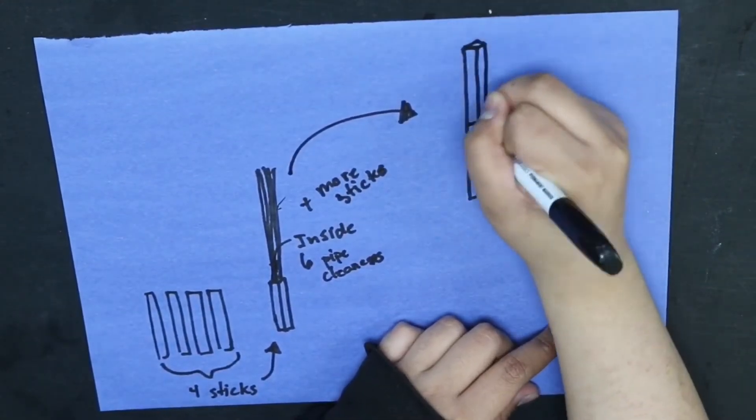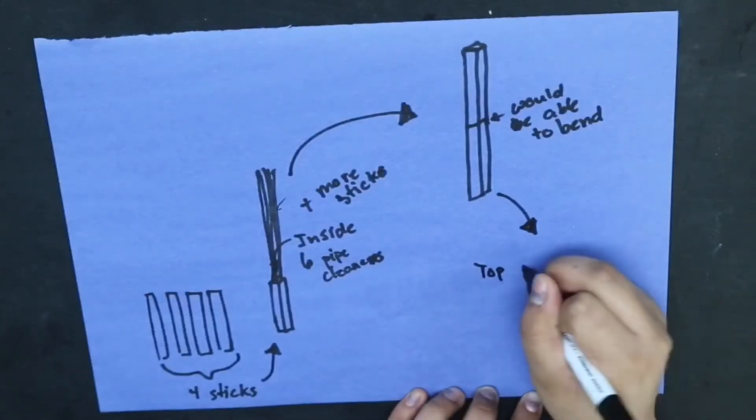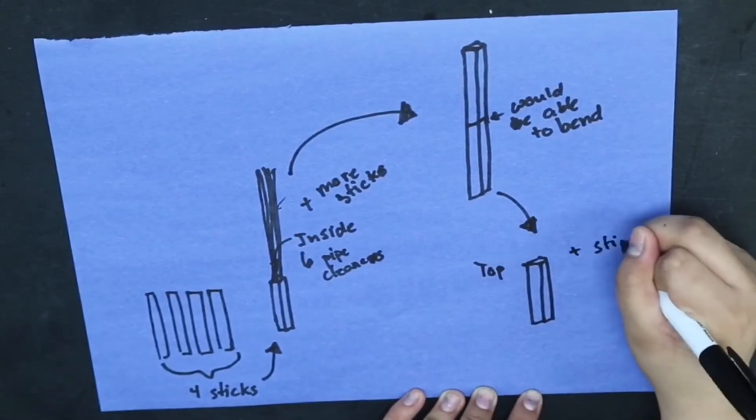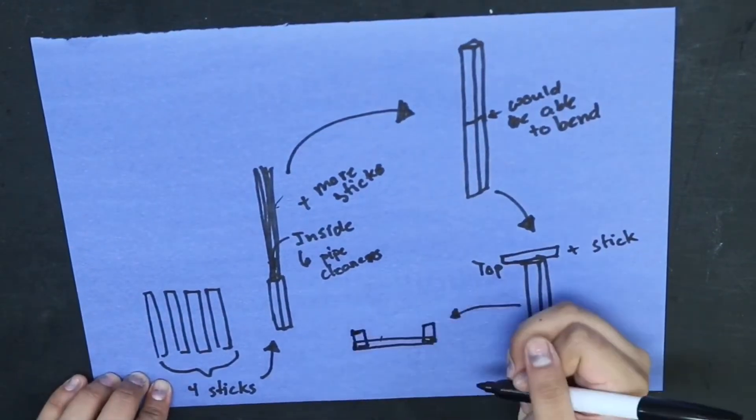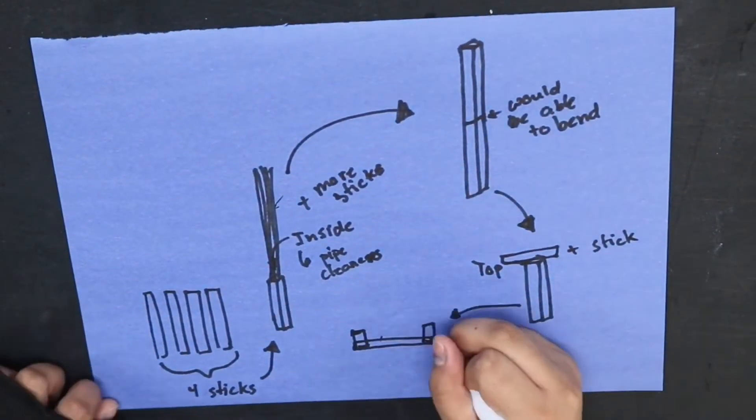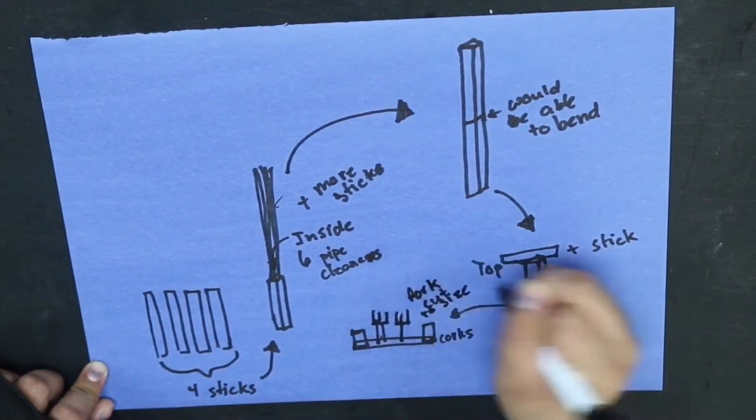For my backscratcher design, I want something that is sturdy but that is also flexible. For this reason, I'll be using pipe cleaners to make the flexibility part and I will be using popsicle sticks to create some sturdiness on the outside. And then for the backscratcher part, I will be using the forks.